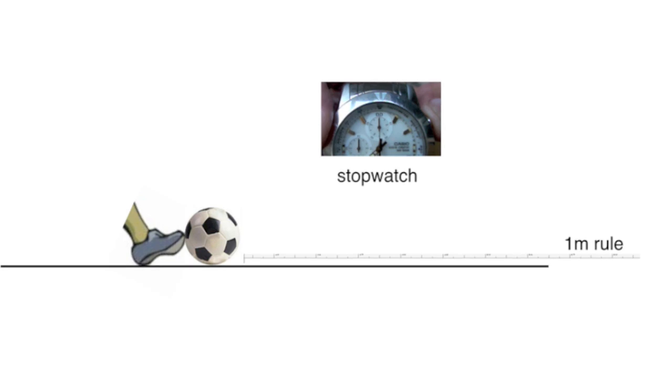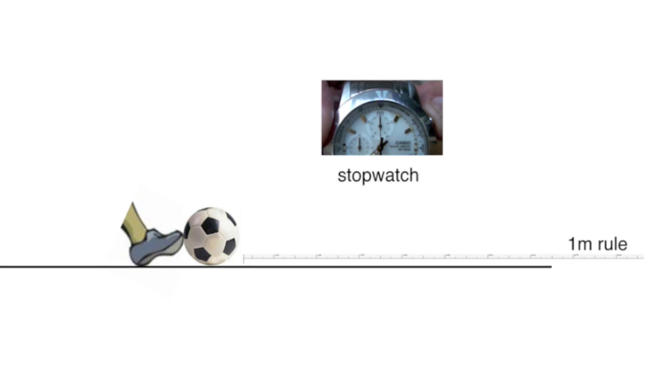A complete revolution of the stopwatch hand is one second. It's marked in tenths of a second and ticks every twentieth of a second.